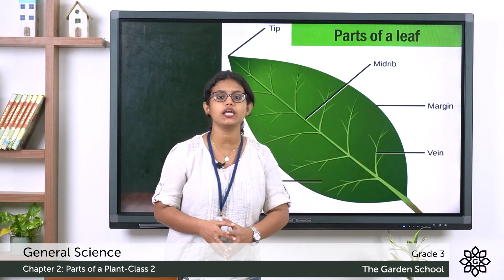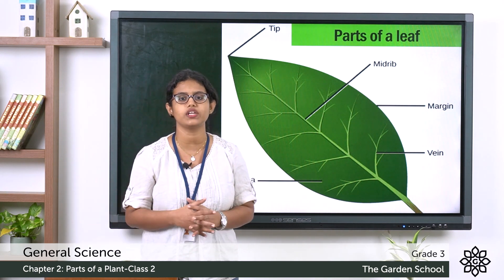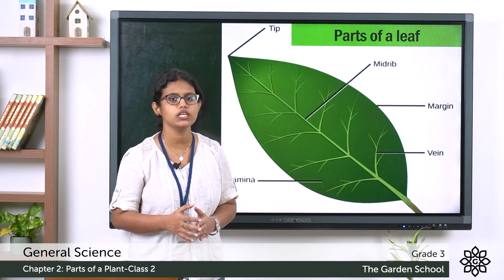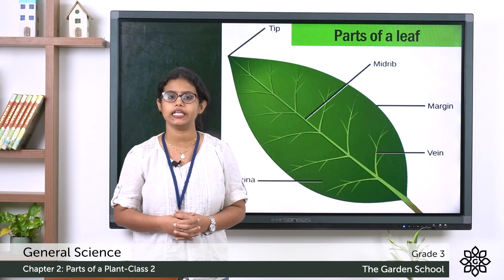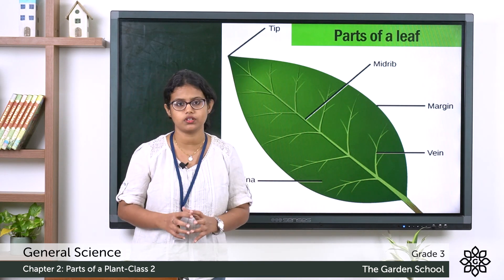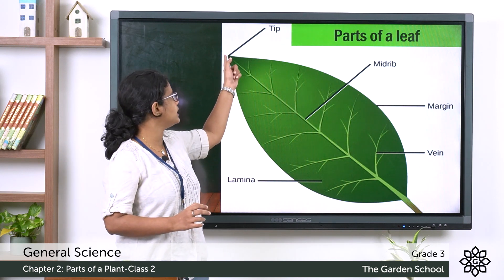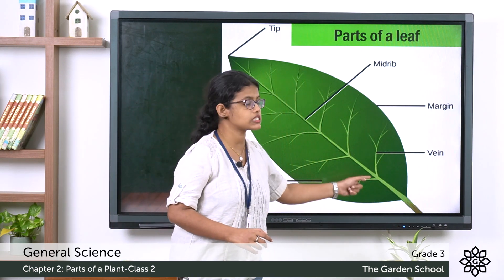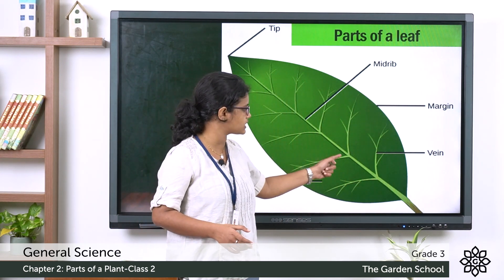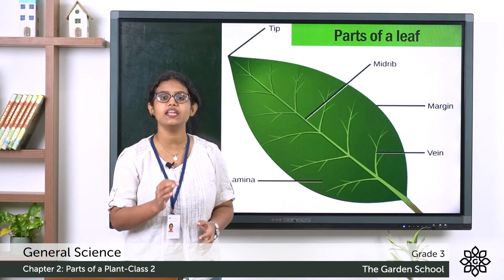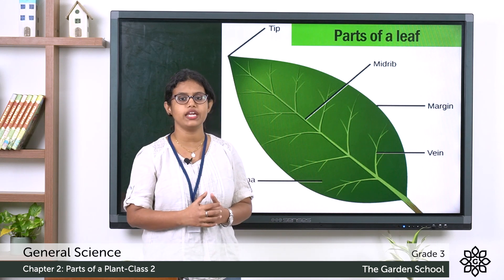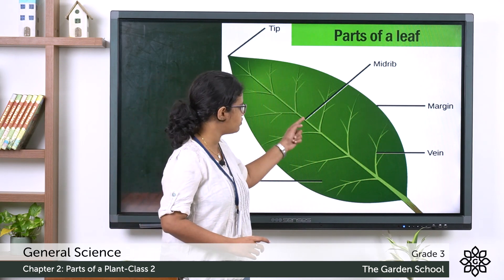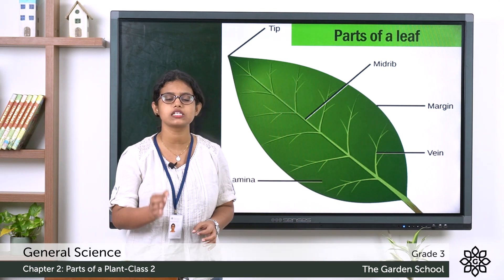The outline of a leaf is called the margin. The topmost point of a leaf is called the tip. If you closely observe, you can see a center vein. This center vein is the main vein of a leaf and it is called the midrib.